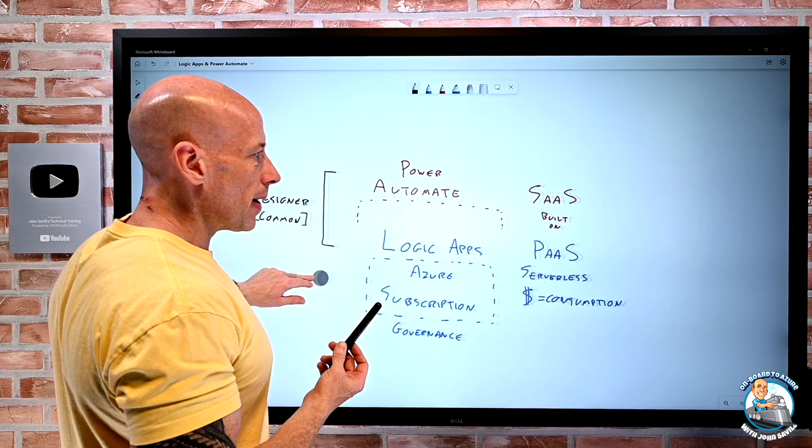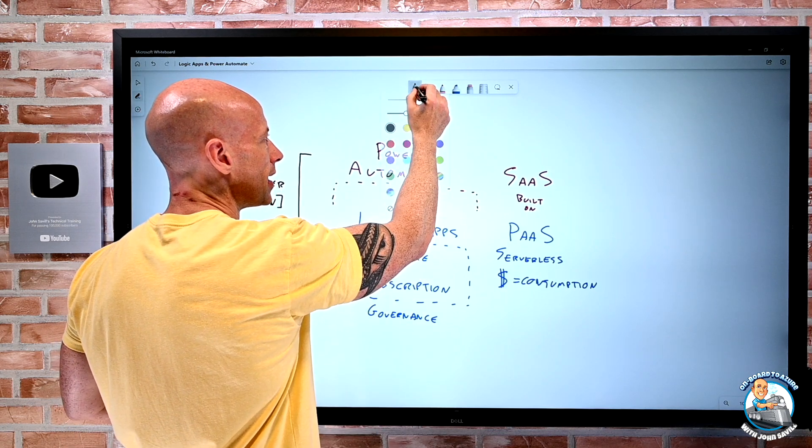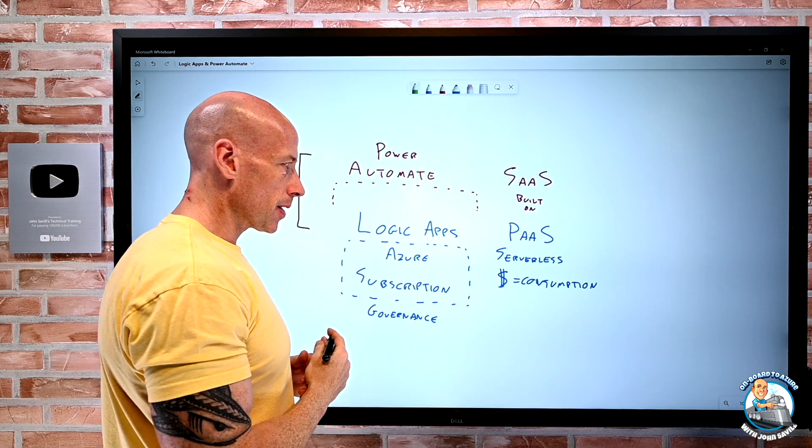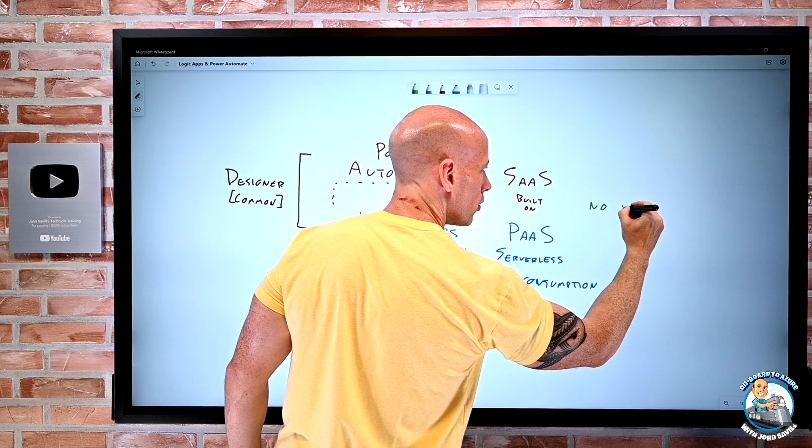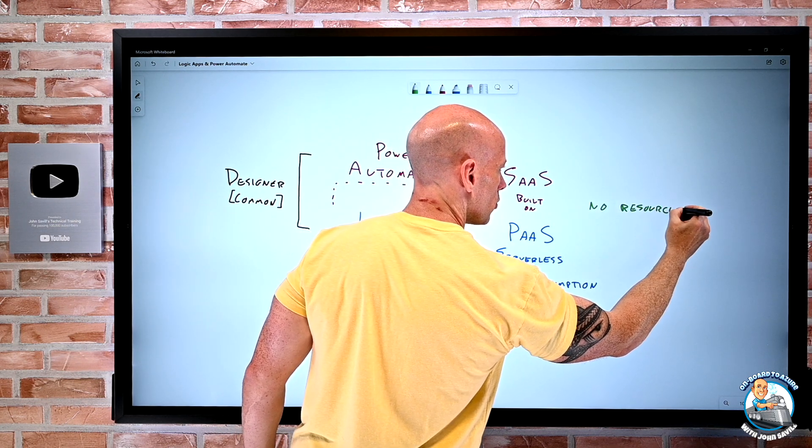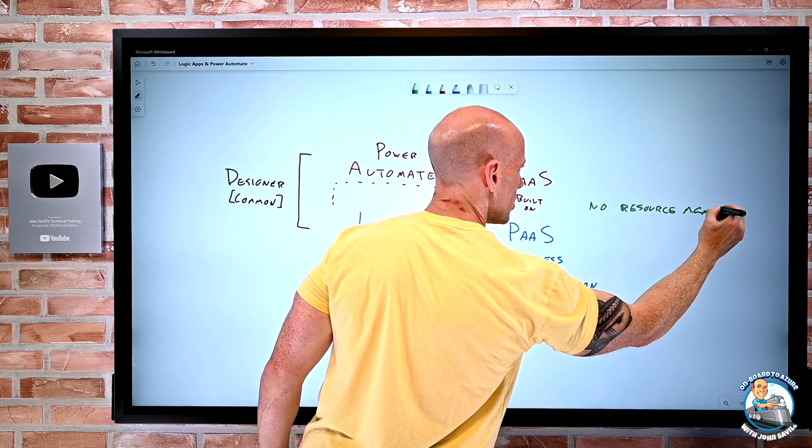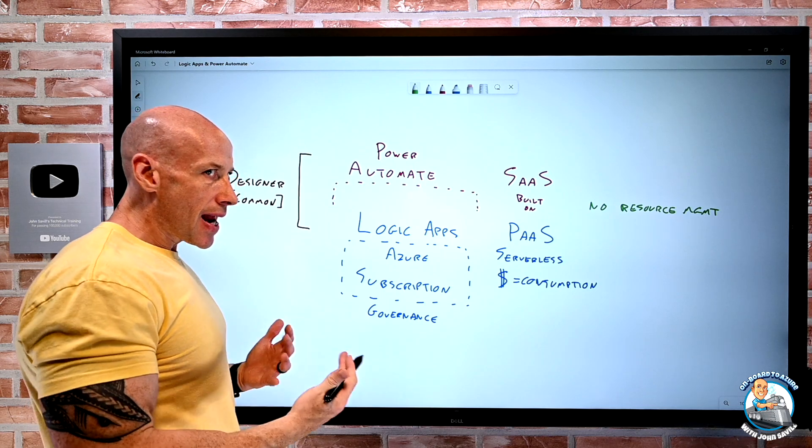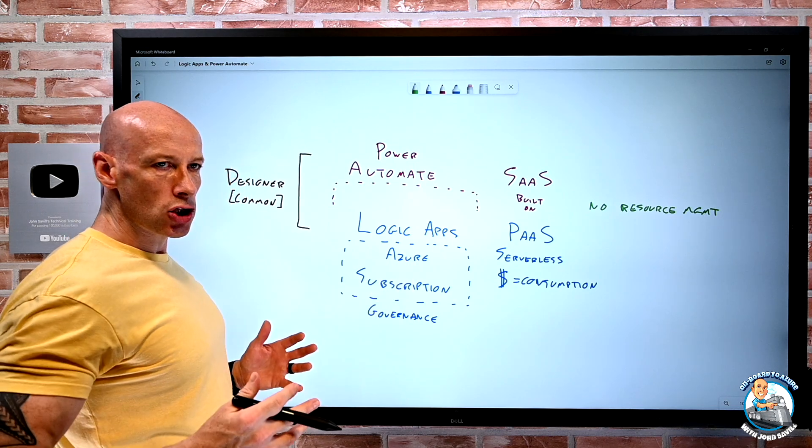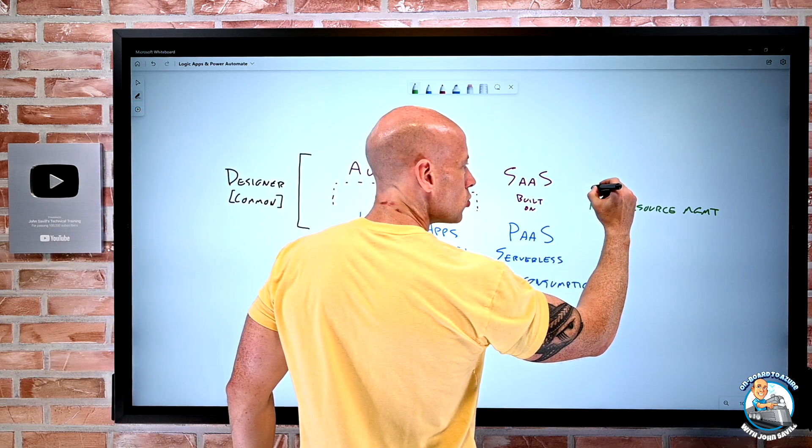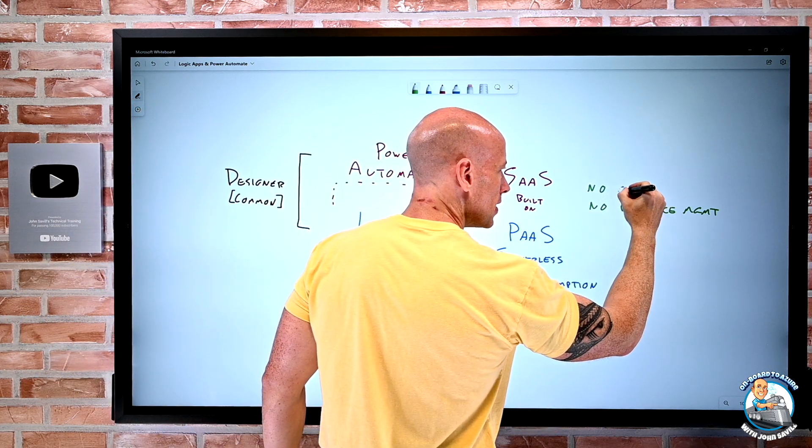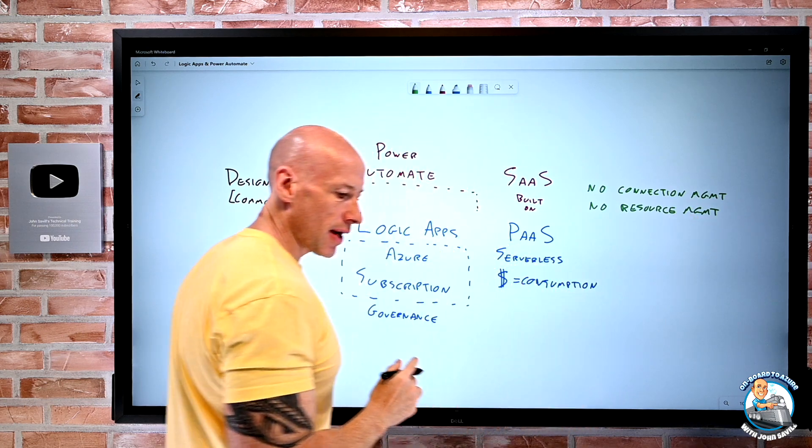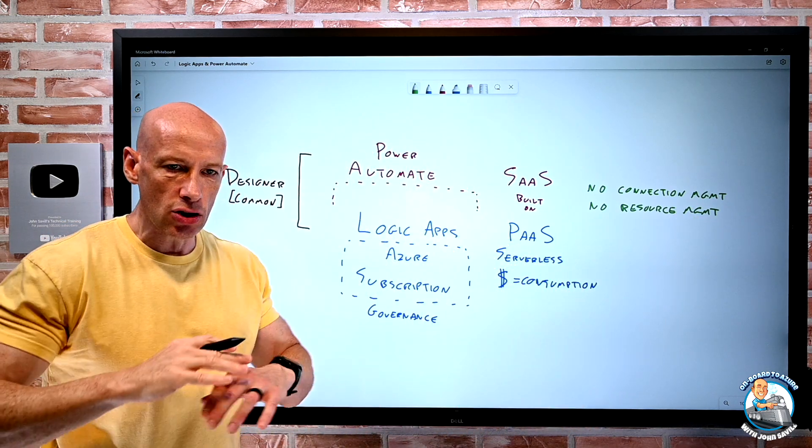So when I think about the Power Automate side and some of the big benefits here, well, I'm not thinking about resource management. So here there is no resource management. I'm not worrying about Azure subscriptions. I'm not worrying about governance. There's no connection management. So with Logic Apps, I set up connections. I manage those. That is all provided as a service layer. So there is no connection management that I have to take care of for that. It's just all handled for me.